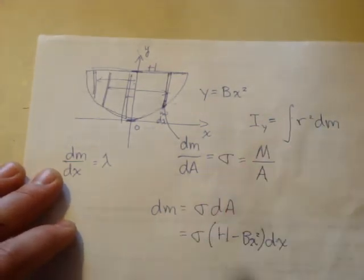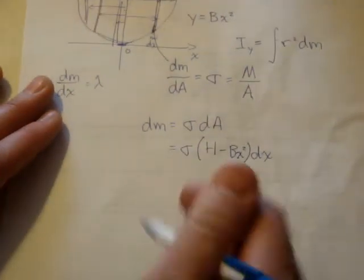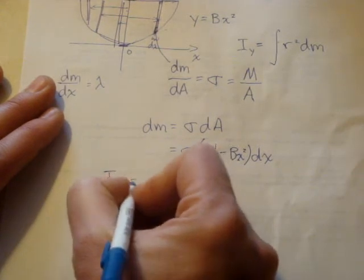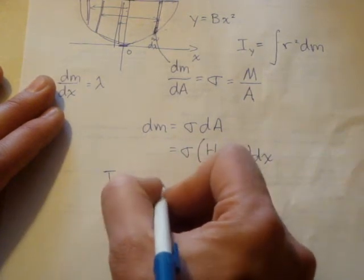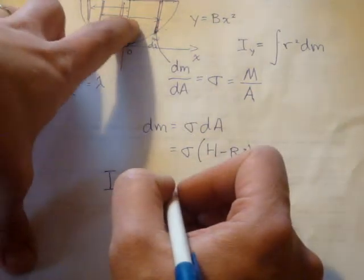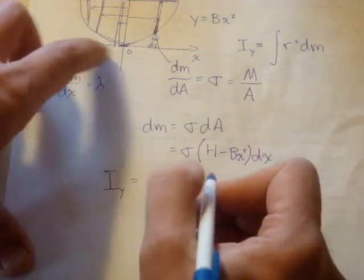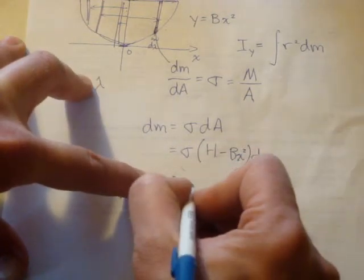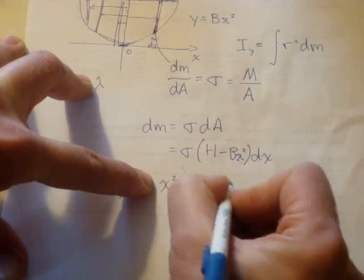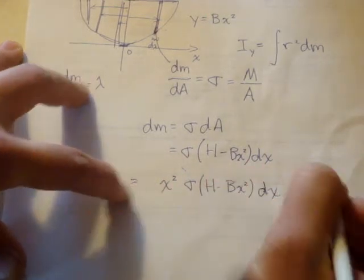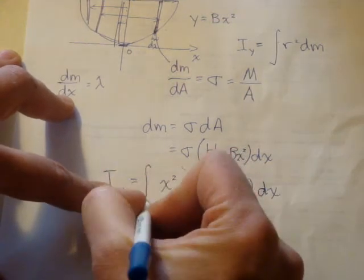So as we start to plug in these relationships into our equation for the moment of inertia about y, we see that we're interested in the distance from the x-axis, which is equal to x. So r squared is x squared. dm is equal to sigma times h minus bx squared dx.